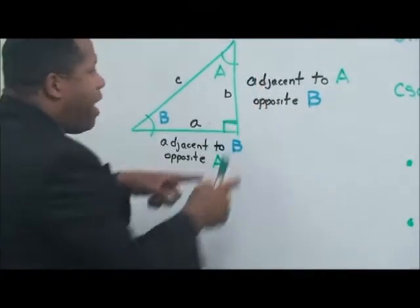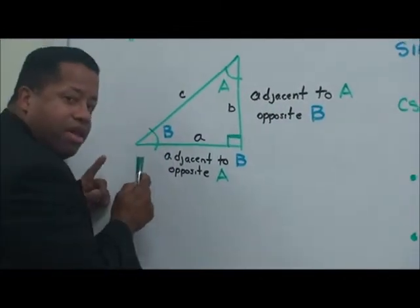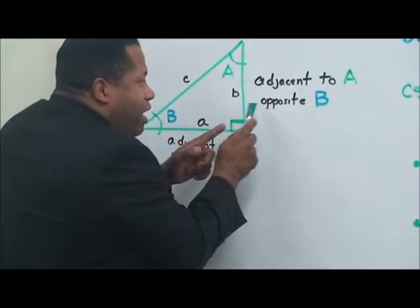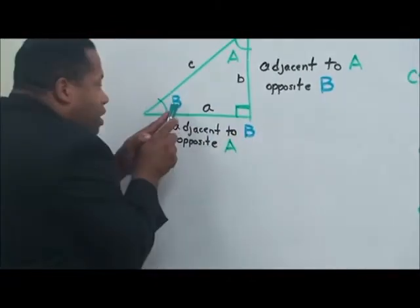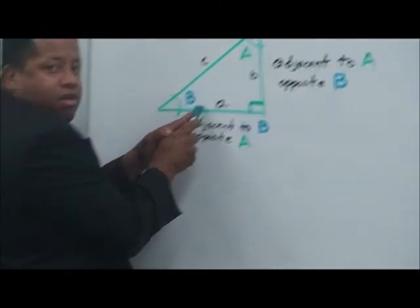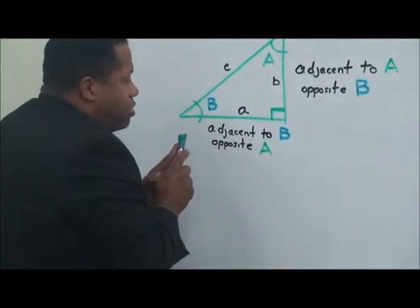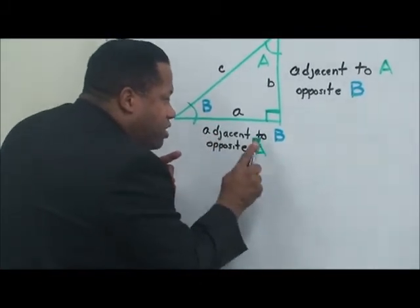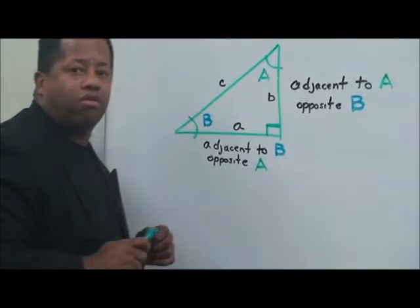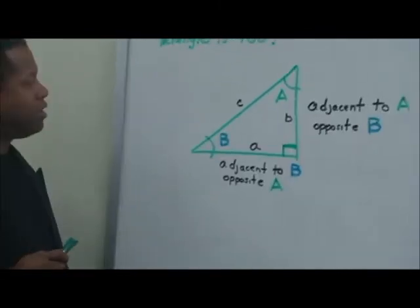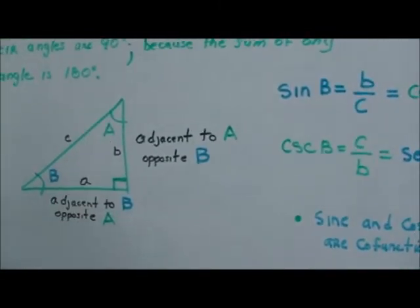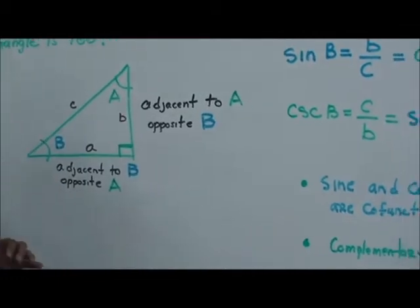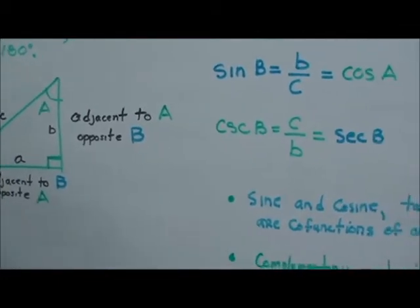Now when we come back here and look at this angle B, this side will be opposite of angle B right here. And also this side, of course, will be adjacent to angle B. So again, you have side B, side A, and the long side which is the hypotenuse.